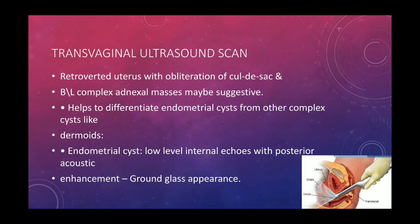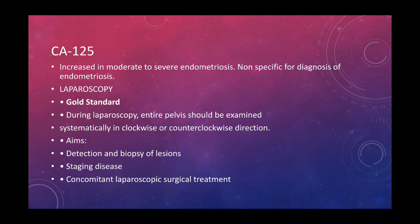For investigations in endometriosis, first is transvaginal ultrasound scan. In the patient studied, she had retroverted uterus with obliteration of the cul-de-sac and bilateral adnexal masses, suggestive of endometriosis. Endometriosis shows low-level internal echoes with posterior acoustic enhancement — a ground glass appearance. CA-125 levels are increased in moderate to severe endometriosis but are non-specific for diagnosis.